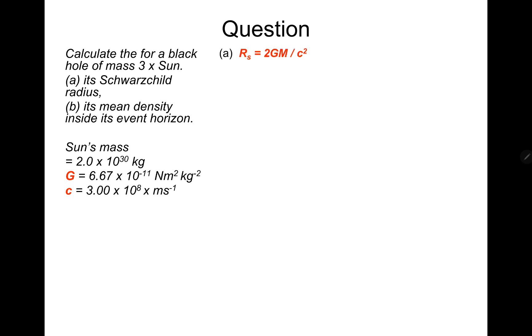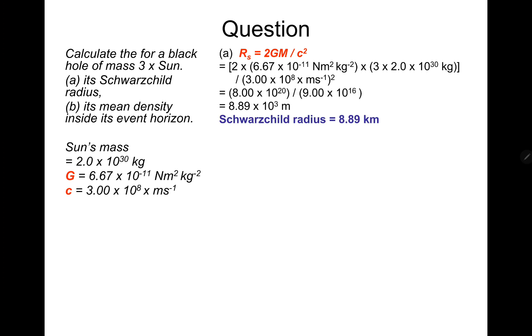So we're going to use Schwarzschild equation, 2GM over c squared. So 2 times the gravitational constant from gravitation, 6.67 times 10 to the minus 11, multiplied by the mass, which we've got here is 3 times the mass of the sun. And then divide it by the speed of light squared. That will give you a Schwarzschild radius of 8.89 kilometers.